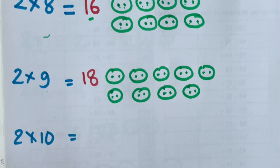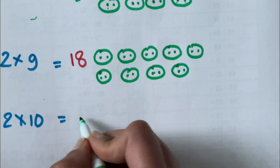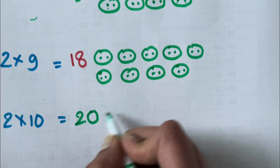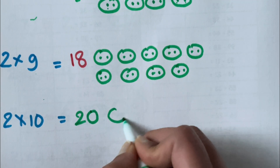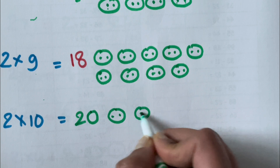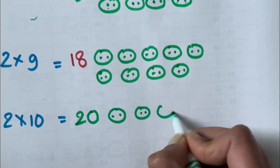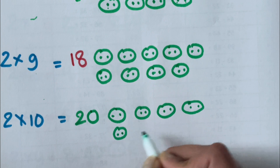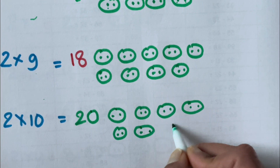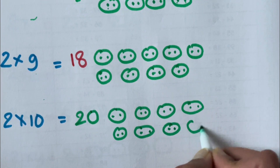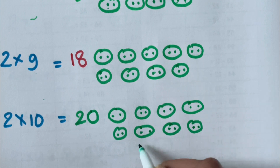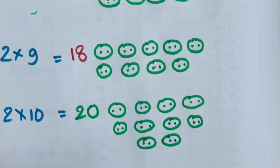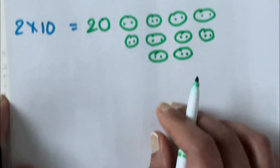2 times 9 is 18 and 2 times 10 is 20. That is 10 groups of 2. 1 group, 2 group, 3 group, 4 group, 5 group, 6 group, 7 group, 8 group, 9 group and 10. 2 times 10 is 20.